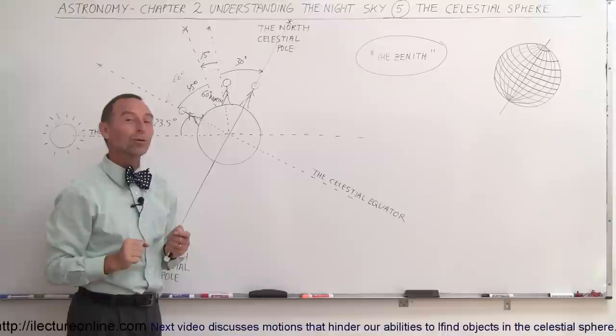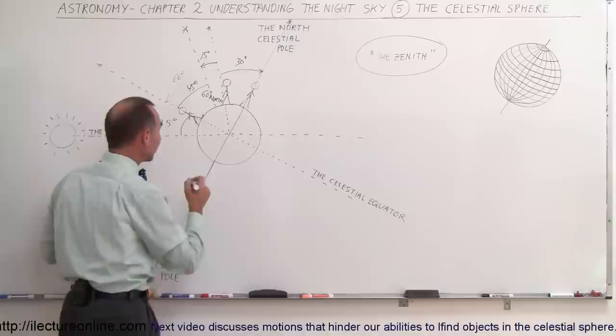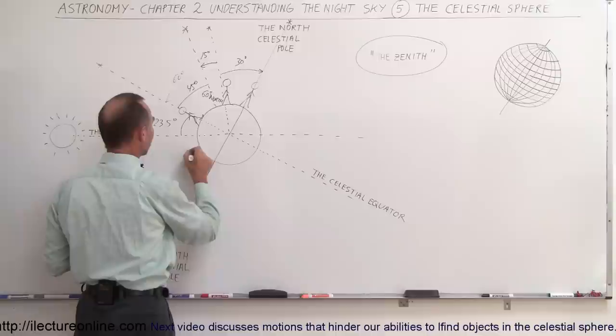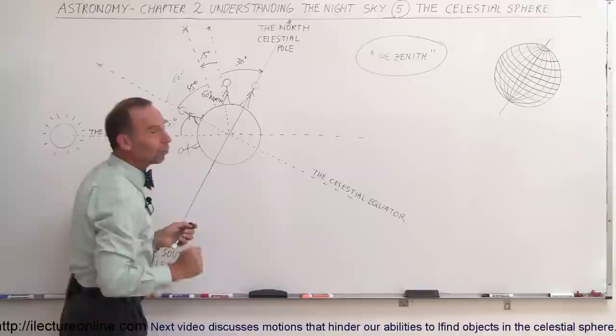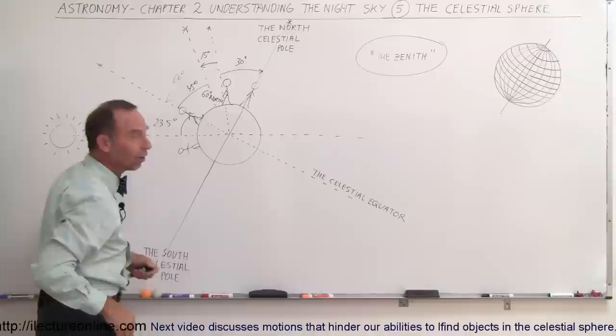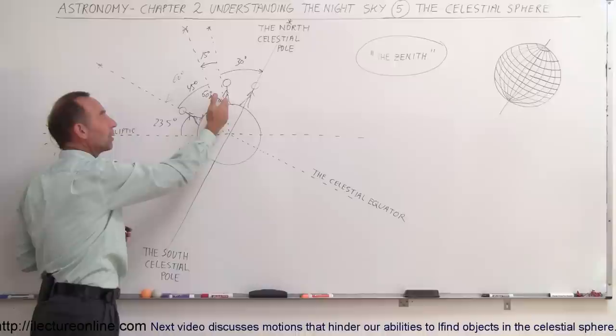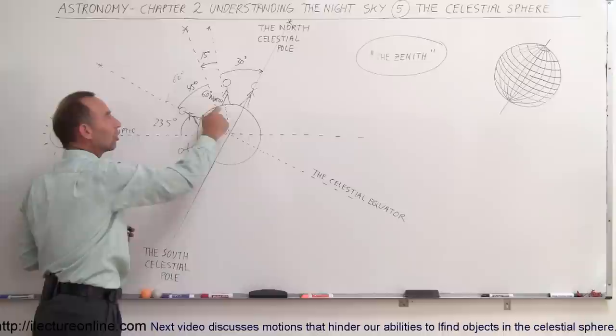Depending upon where you are on the Earth, you can see certain things and you can't. What about a person living in South America, somewhere in Argentina? If that person wants to see the north pole, that's not going to be possible — in order to see the north pole you'd have to look into the Earth. They can see everything in the southern hemisphere and the southern portion of the celestial sphere. So location from where you're observing is very important — knowing where you are relative to the equator, the north pole, or the south pole, and then knowing which direction to look to find certain things in the sky.